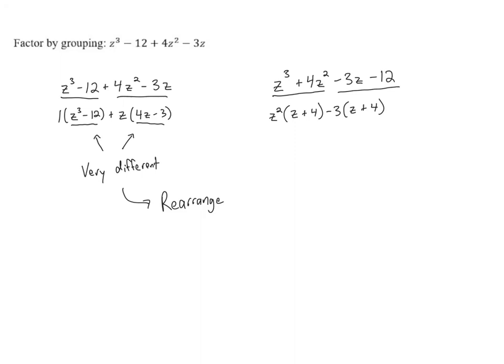Now that we've rearranged things and grouped them in this new way, we do have the same thing in each set of parentheses. Each group contains a z + 4 that becomes the GCF of the groups, leaving us with leftovers z² - 3. This is our final answer: (z + 4)(z² - 3).